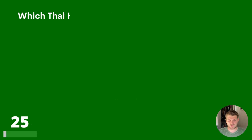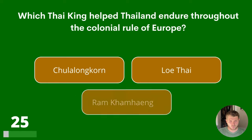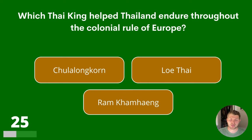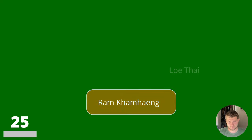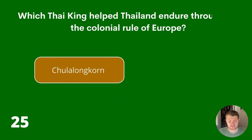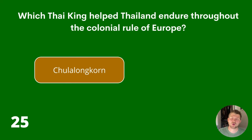Question 25. Which Thai king helped Thailand endure throughout the colonial rule of Europe? Chulalongkorn, Low Thai or Ram Camhain? The answer is Chulalongkorn.